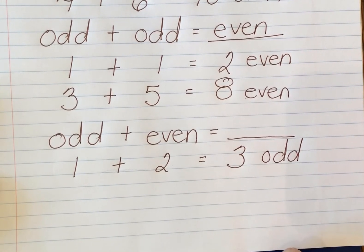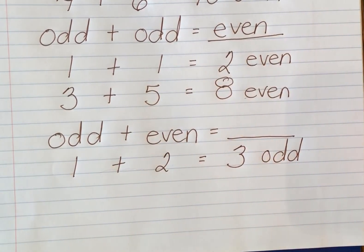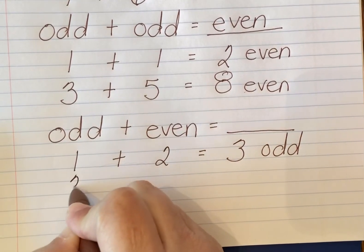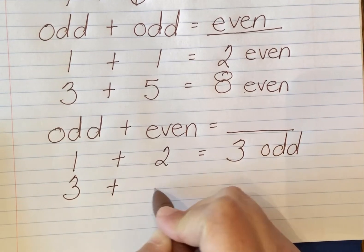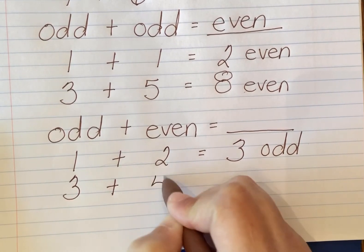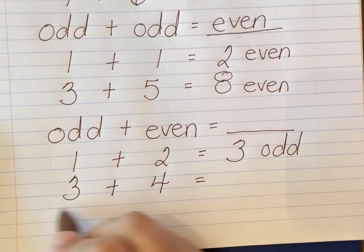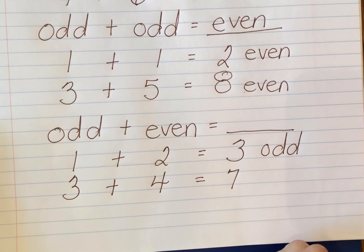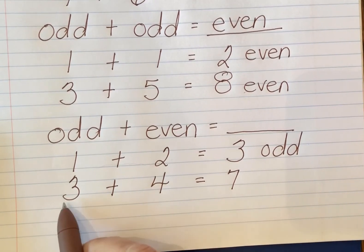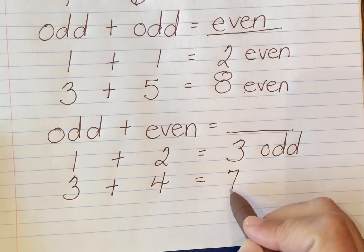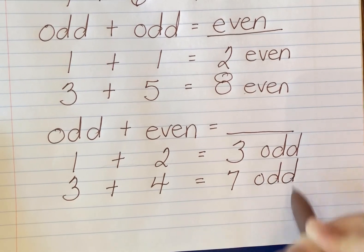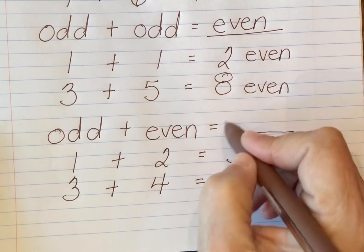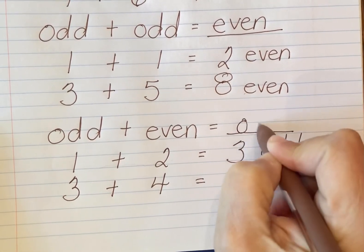One example doesn't make a pattern, so let's try another. Another odd number: let's try three, and an even number: let's try four. Three plus four equals seven. The sum of this odd number and even number is also an odd number. So the pattern is: when you have an odd number and add an even number to it, the sum is always going to be odd.